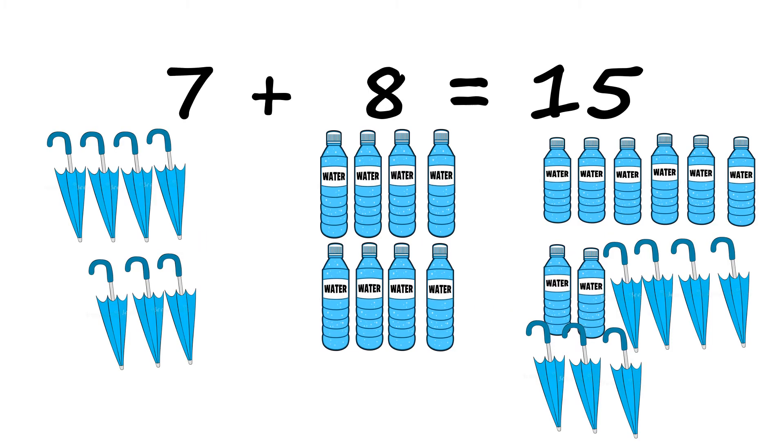Now let us look at the next example. 7 plus 8 is equal to 15. I have 7 umbrellas and 8 water bottles. Now when I put the water bottles and the umbrellas together my answer is 15.